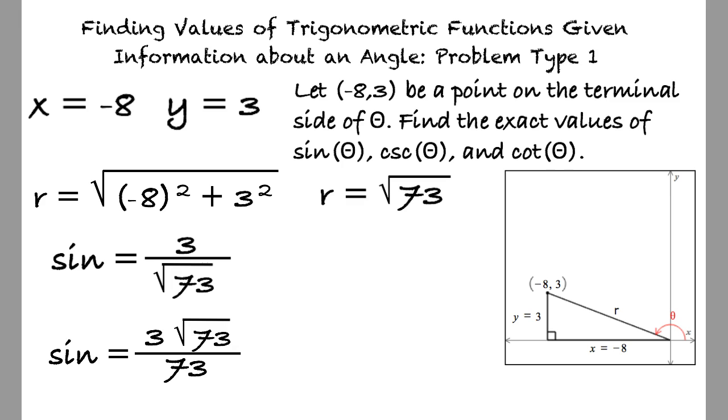Then, we can substitute the hypotenuse over the opposite side for cosecant, which results in √73 over 3.